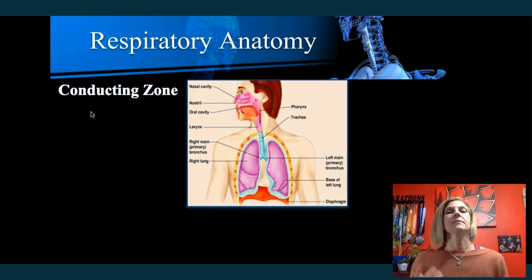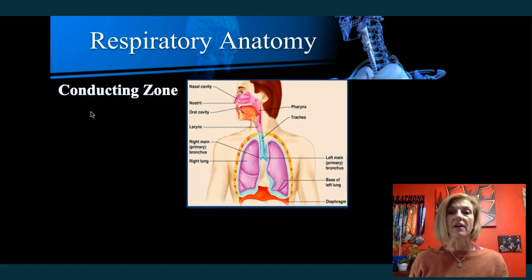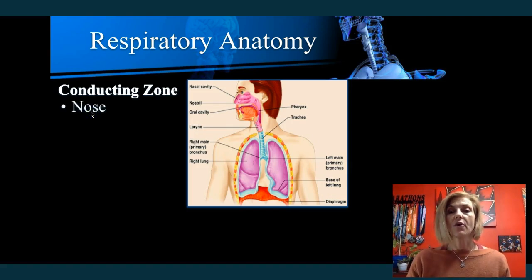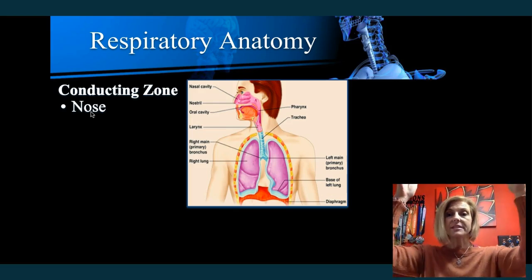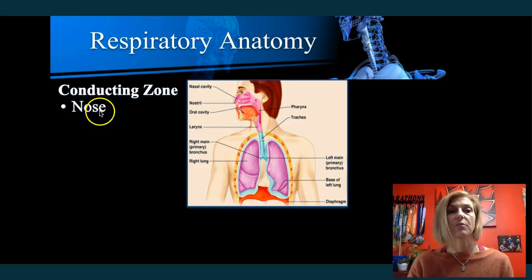The respiratory system is basically divided into a conducting zone — the movement of air from outside to inside — and a respiratory zone, which is the exchange of gases. Starting with your nose, you should be able to trace the pathway of an oxygen molecule from outside the body until it reaches your bloodstream. This would be your pathway.